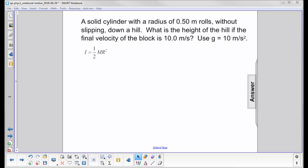A solid cylinder with a radius of 0.50 meter rolls without slipping down a hill. What is the height of the hill if the final velocity of the block at the bottom is 10 meters per second? Use g equals 10 meters per second squared.